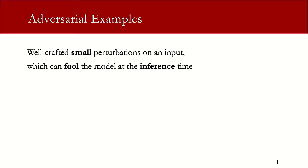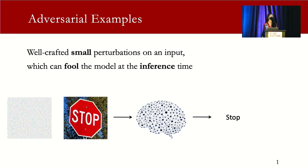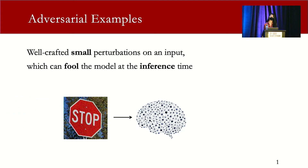Adversarial examples are one of the most well-known attacks against deep neural networks. Researchers have found that imperceptible perturbations can fool the models to make wrong decisions. For example, if we add this well-crafted small perturbation on the stop sign image, the model will misclassify it to speed limit.